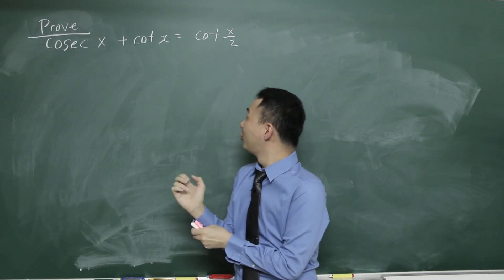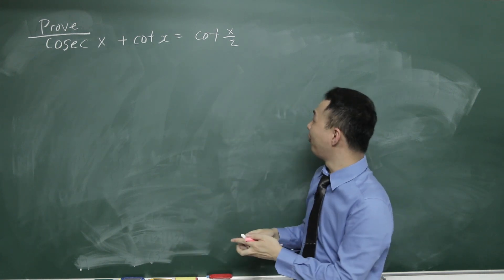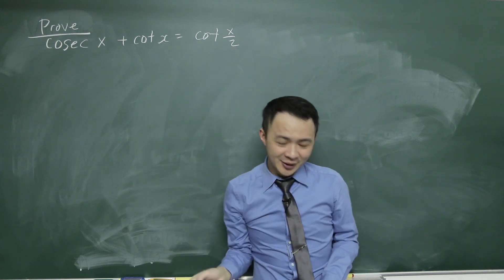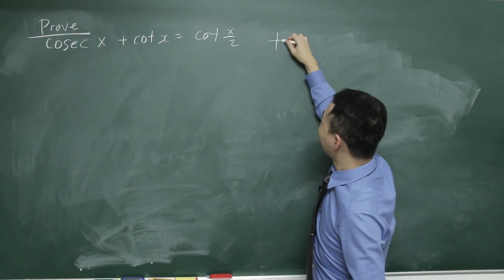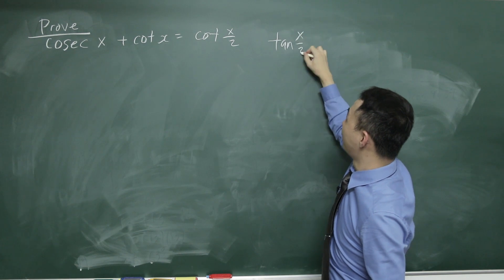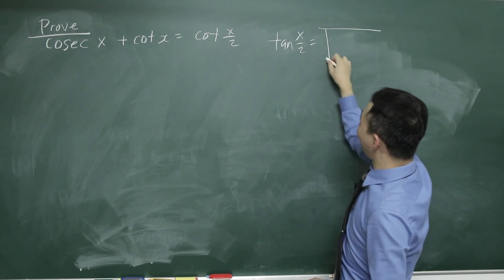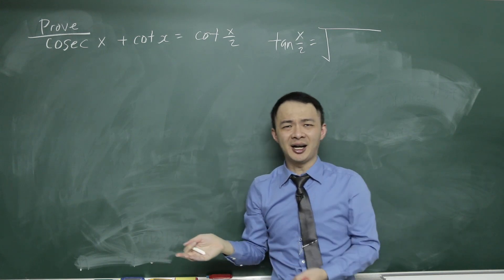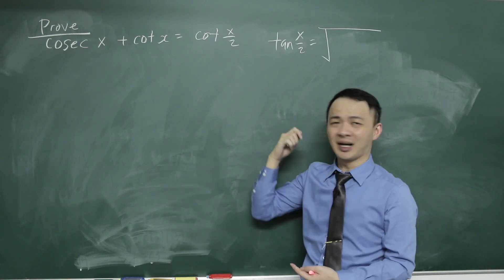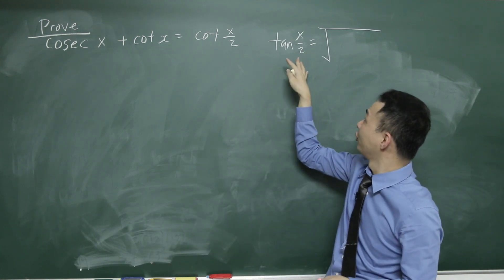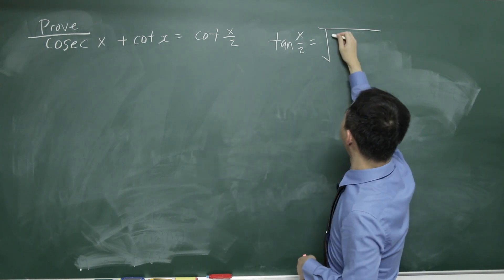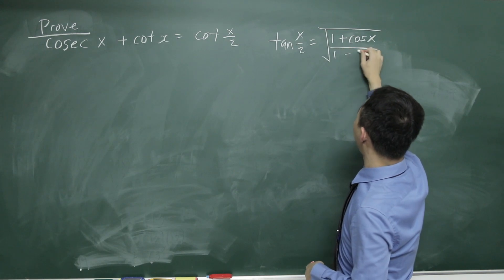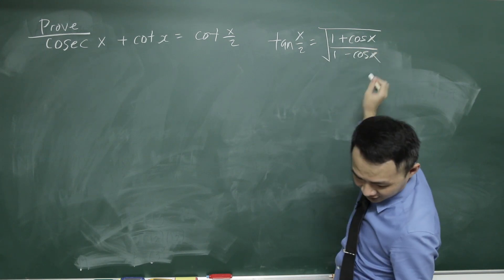What I will do here is give you a formula for cotangent x over 2. Basically you have a tangent x over 2 formula. Of course you want to know how to get this formula — you can go search online, and I think I have one video about how to get this formula. This formula is: 1 plus cos x over 1 minus cos x.